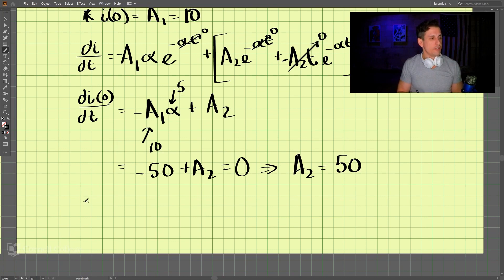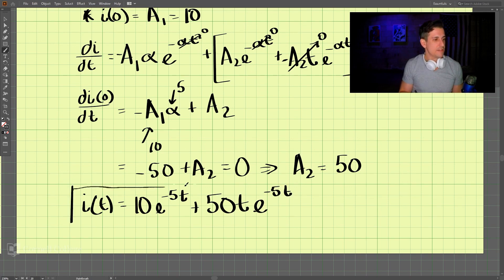So putting this all together, our equation for the current is 10e to the negative 5t plus 50t times e to the negative 5t. And that is our solution to this problem.